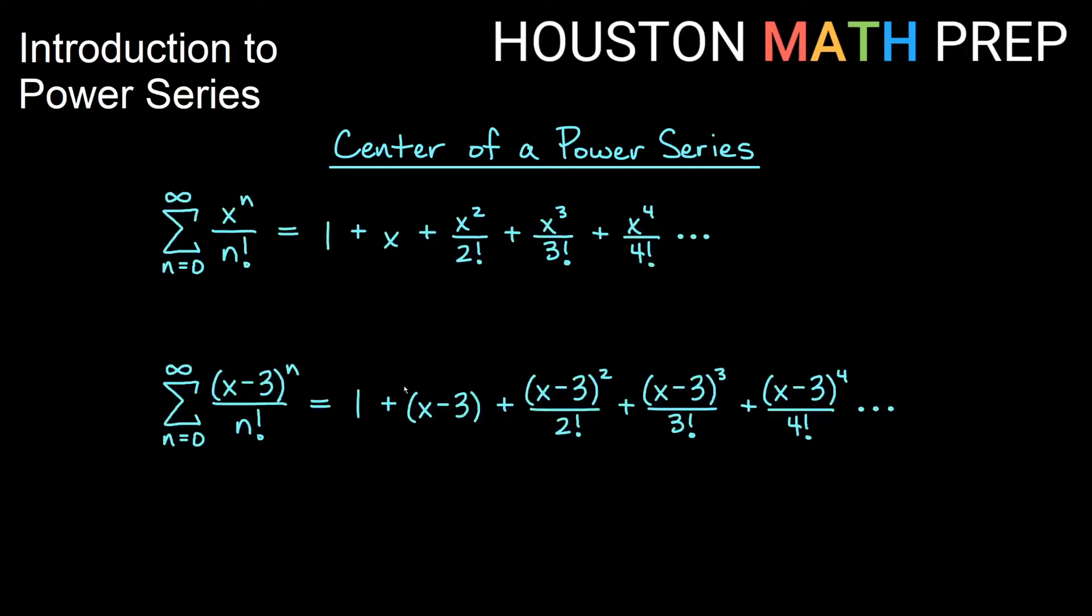Here we just have a couple of examples. This top one, a very common power series that we would see, the sum from 0 to infinity of x to the n over n factorial, this is actually the power series for e to the x. We'll get to some of those details later, but we have 1 plus x plus x squared over 2 factorial, plus x cubed over 3 factorial, so we're getting factorials as our denominators.